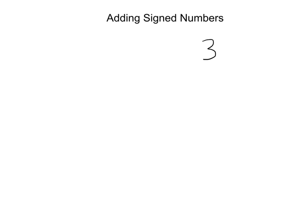For example, let's say we had a problem such as three plus negative four. You're going to want to think of this as three positives and four negatives. To add any signed numbers, you can really follow three steps. Step number one would be to draw a picture.